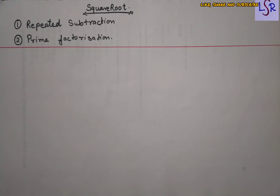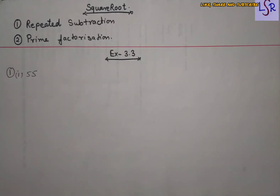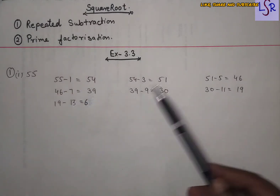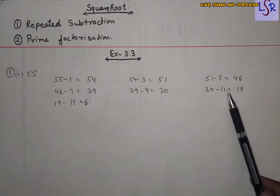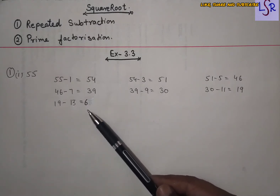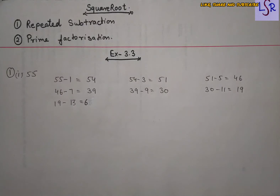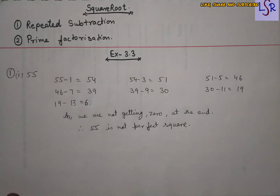Let's see the first part: we have the number 55. We are going to subtract consecutive odd numbers from 55 and check whether it is a perfect square or not. On subtracting the consecutive odd numbers 1, 3, 5, 7, 9, 11, and 13 we are getting 6 at the end — we are not getting zero. This means 55 is not a perfect square.